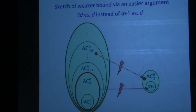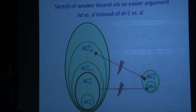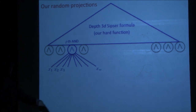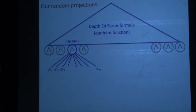Let me sketch the proof of a weaker 3D versus D separation via a simpler argument — this already suffices for both applications. Our hard function lives in depth 3D. Here's the random projection designed with the Sipser function in mind. Consider the Sipser function's bottom layer of AND gates, each touching distinct variables. For the j-th AND gate, you either put down a 1 or a new variable yj named after the gate, independently with probability 1/2, conditioned on not getting all-ones. Under such a projection, the j-th AND gate becomes AND of yj's, which simplifies to just yj.